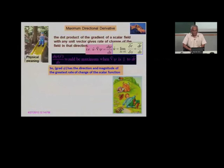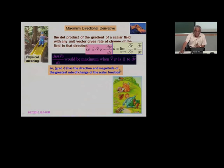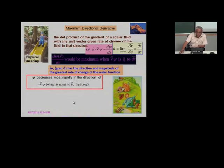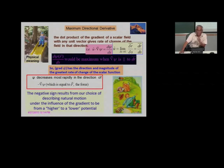Force is the negative gradient of potential. Why is force the negative gradient of potential? In the case of a conservative force, the negative sign helps us get the work-energy theorem right. Looking at the maximum directional derivative in more detail: d-psi by ds will be maximum when the gradient of psi is parallel to the direction in which you are moving. Gradient of psi has the direction and magnitude of the greatest rate of change of the scalar function. In the case of height, it is very clear in which direction to go to get maximum ascent.